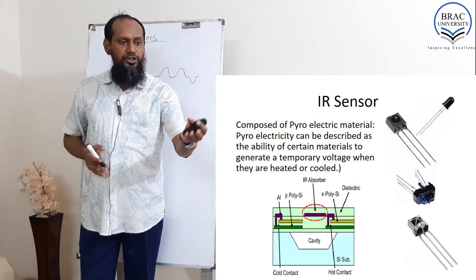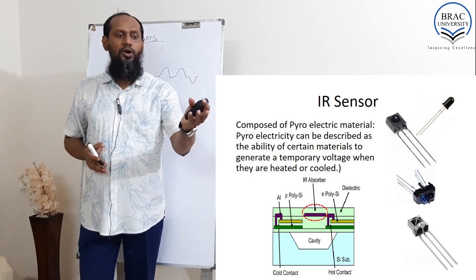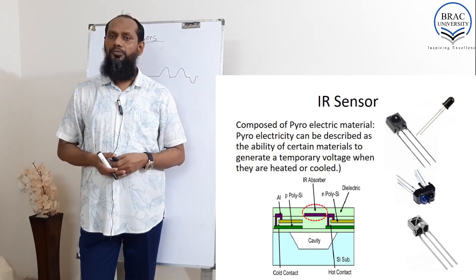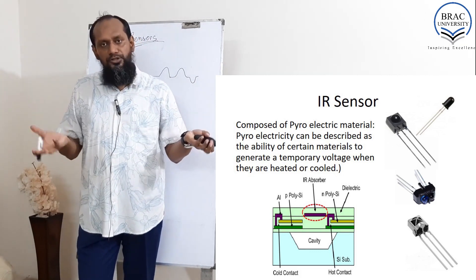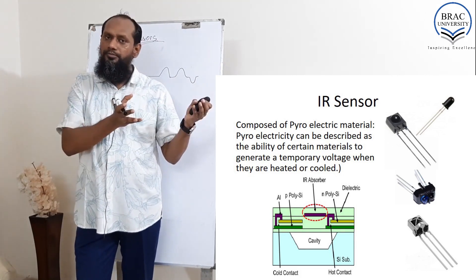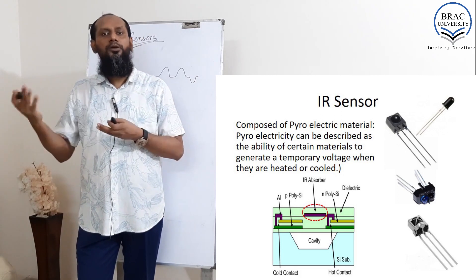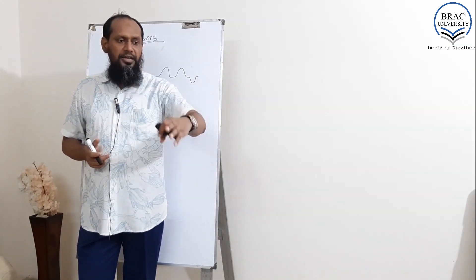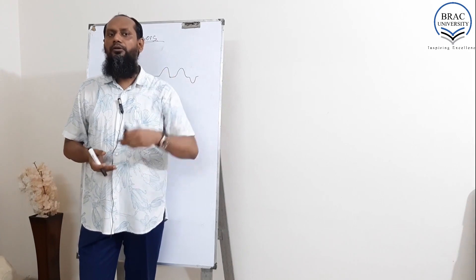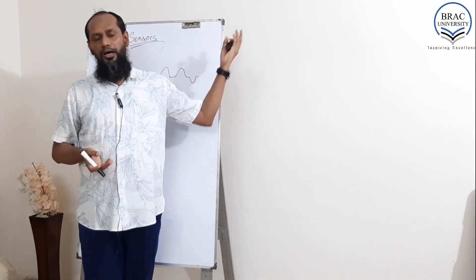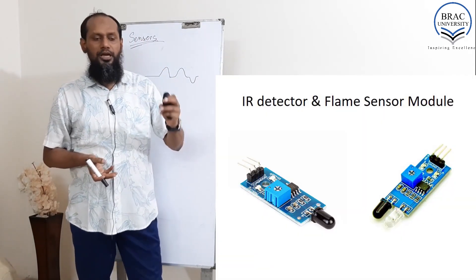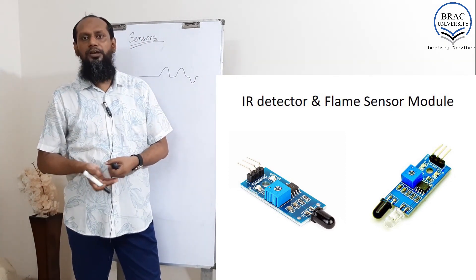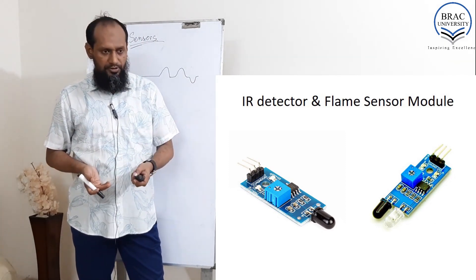Certain materials generate a temporary voltage when they are heated or cooled. Some sensors react with heat, some react with cool. Here are some examples: one is used in televisions, remote air conditioners, and similar devices. Another is commonly used in line following robots. So those are some examples of IR sensors.